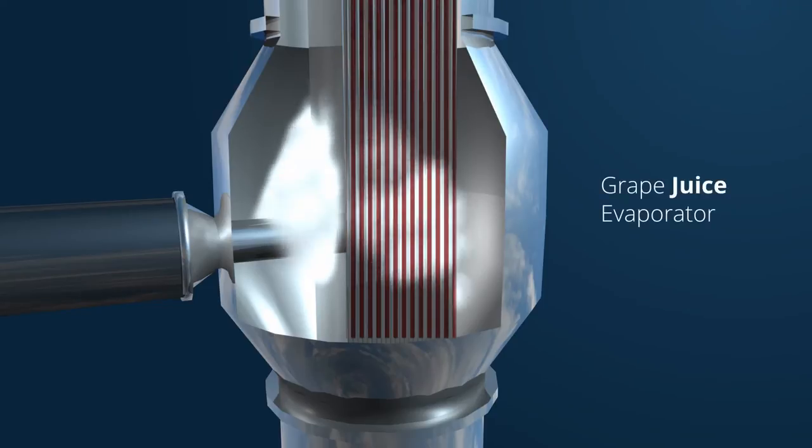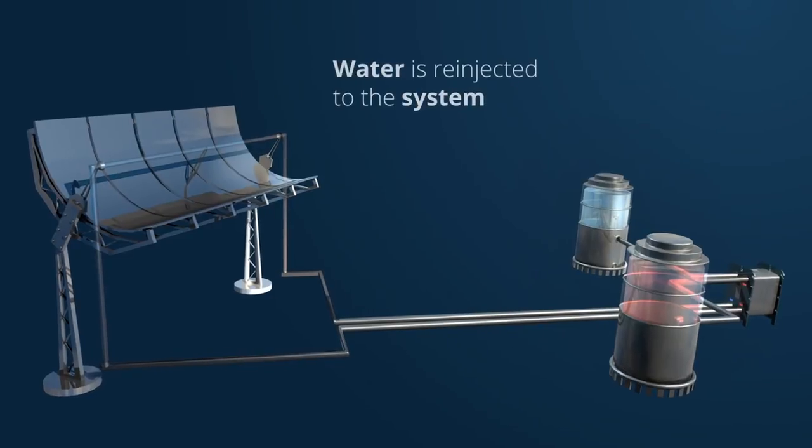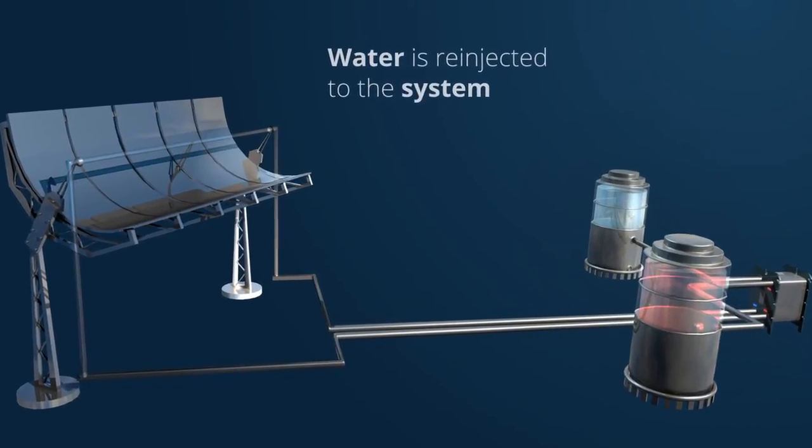The water evaporated from the grape juice is then collected, adjusted and re-injected into the system, creating a self-sustaining cycle.